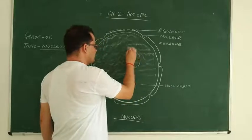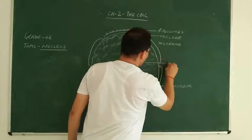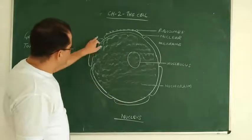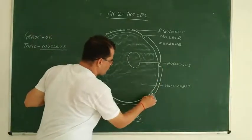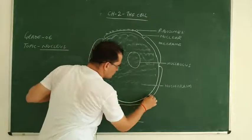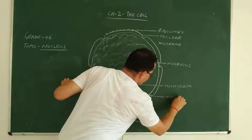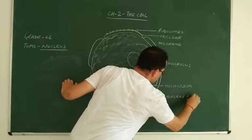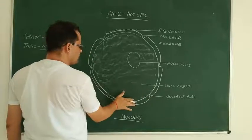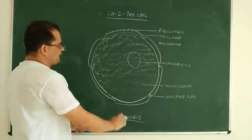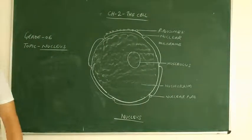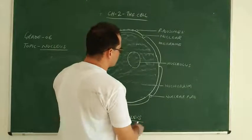In this nucleoplasm lies the nucleolus — a spherical body. On the nuclear membrane you can also find some pores, known as nuclear pores. Inside the nucleus, this spherical body is the nucleolus. The nucleoplasm contains enzymes and ions. The number of nucleolus can be one or more than one.